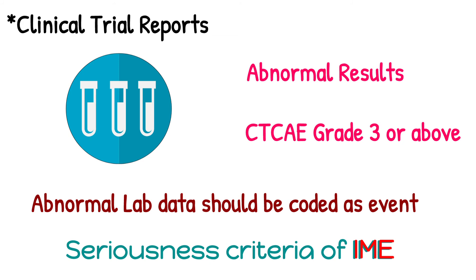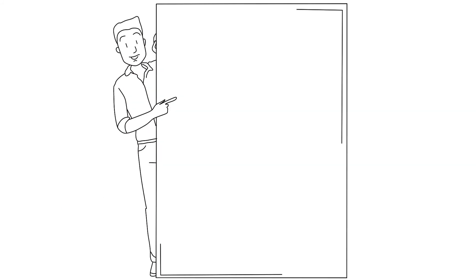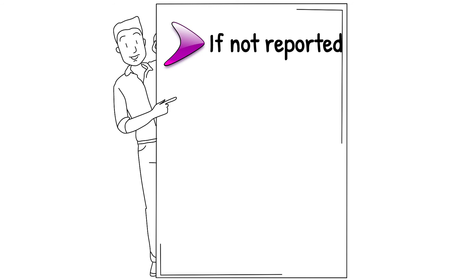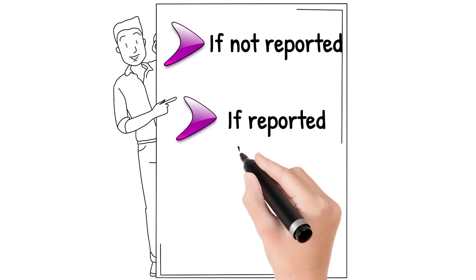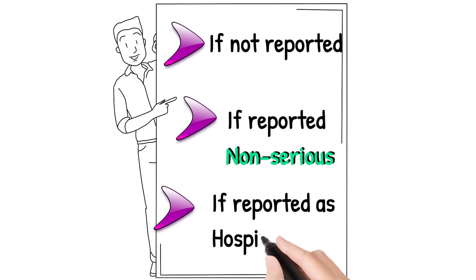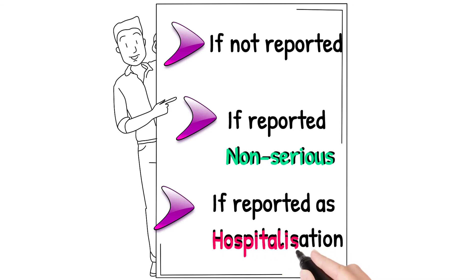Now let's discuss when to assess the seriousness criteria of any report. First condition: if seriousness of the event is not reported by the reporter, then we need to assess the seriousness based on the parameters we have discussed. Second condition: if seriousness is reported as non-serious by the reporter, then we need to reassess the event seriousness to make sure the report is truly non-serious. Third condition: if reported seriousness is hospitalization, then we need to reassess to confirm whether the patient was hospitalized for more than 24 hours or not.